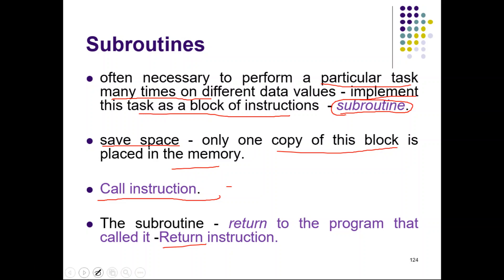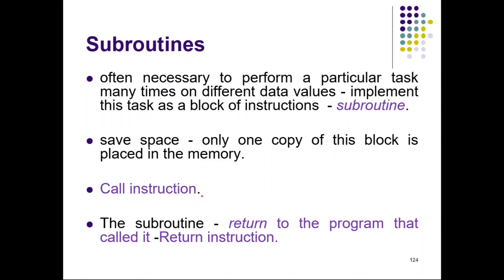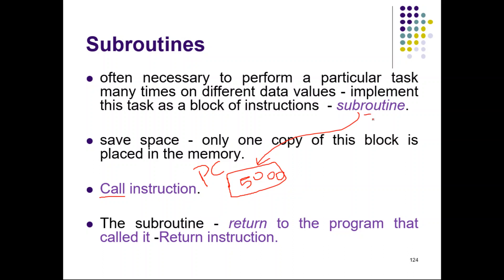Let us see how this can be implemented. When there is a CALL instruction, the control should go to the subroutine — that will be done through the PC, program counter. The CALL instruction may be at one address, but the starting address of the subroutine may be somewhere else. Whenever there is a CALL instruction, the program counter will be replaced with the starting address of that particular subroutine. If the starting address of the subroutine is 5000, then the program counter will be replaced with 5000, and from there it will start executing.